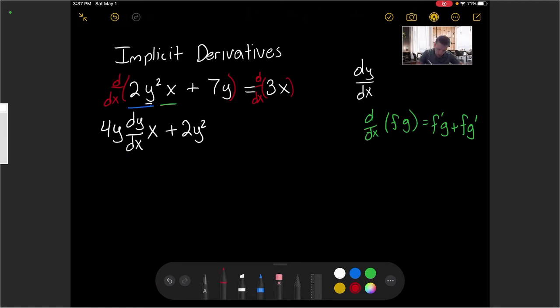The next term that I want to take a look at is the 7y. So the derivative of 7y here will have 7 as the constant. The derivative of a y term here we can just write as dy/dx, derivative of y with respect to x.